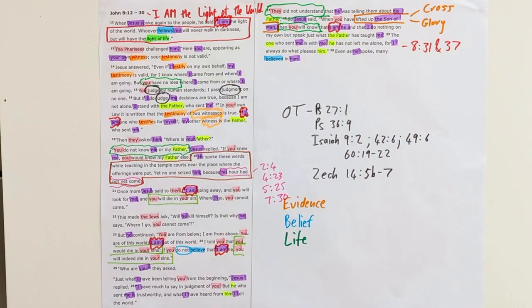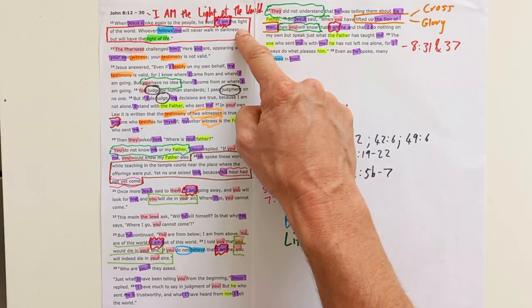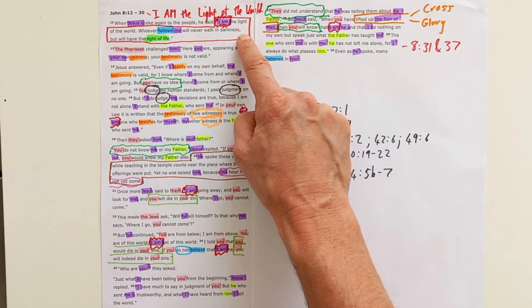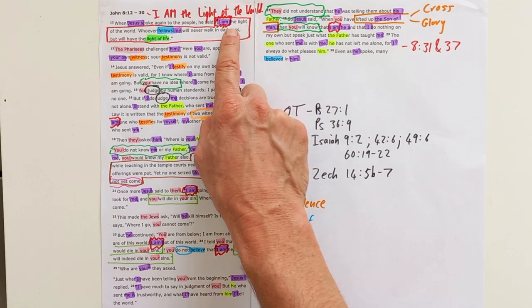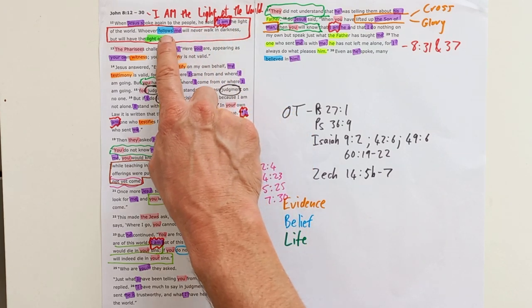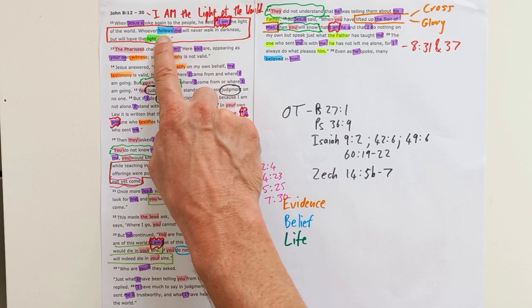And so John gives us all this evidence about people getting it wrong, making the wrong call about who Jesus is. But right at the beginning he told us how we should respond to Jesus, because Jesus said 'I am the light of the world.'